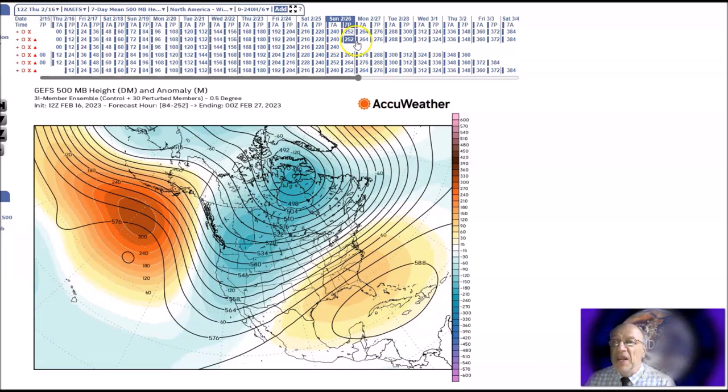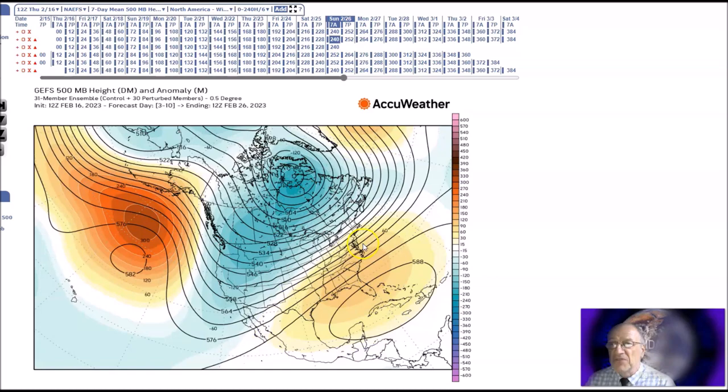We're going to look at the period for February 24th to 28th and see the pattern doesn't change much. Ridge, trough, ridge configuration.